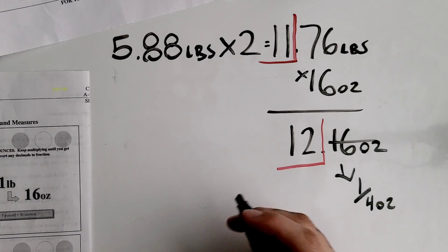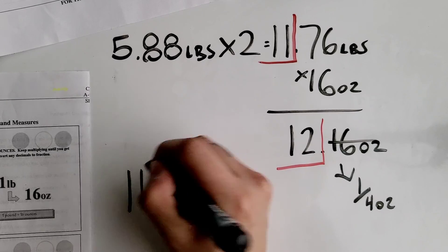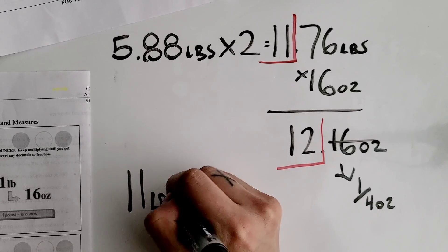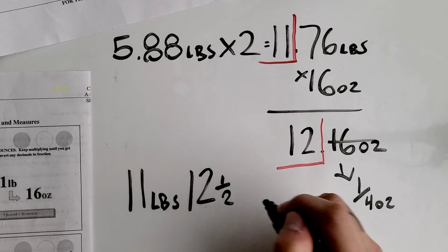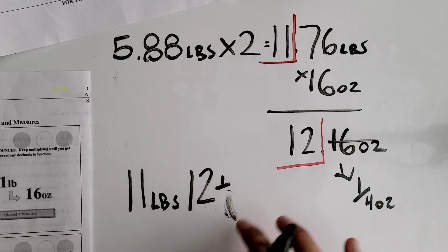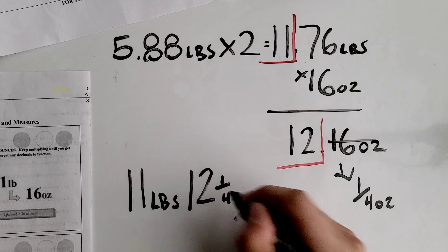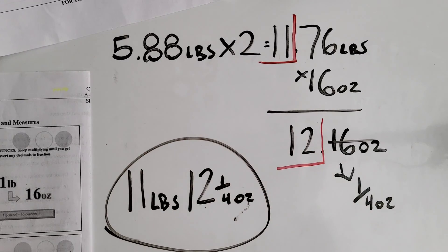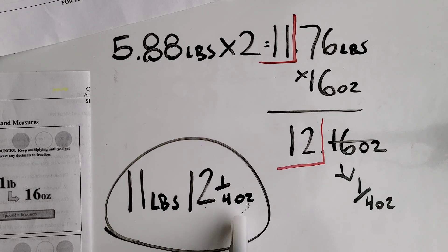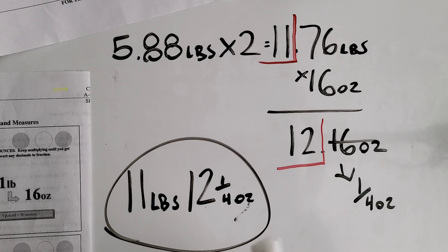Our final answer is 11 pounds and 12 and one fourth ounces. That is your final answer — you need 11 pounds and 12 and one fourth ounces of pineapple slices in order to make 200 portions of the pineapple upside down cake.